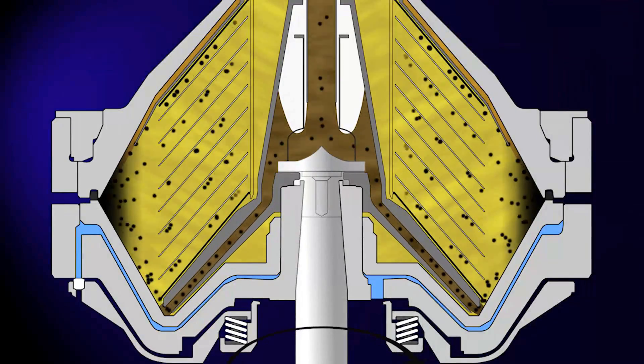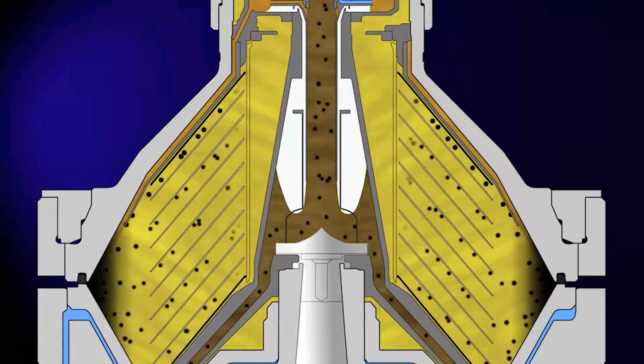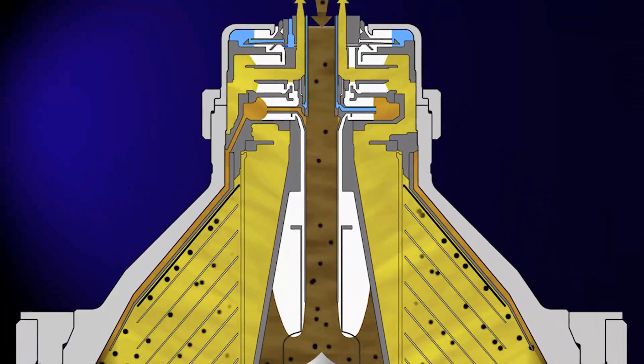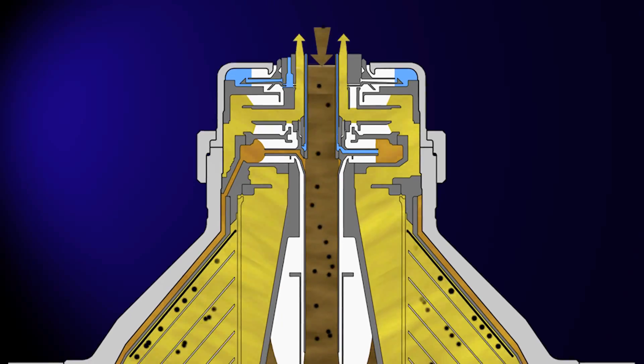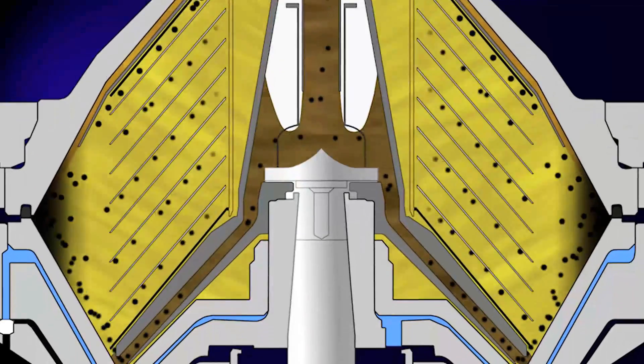The liquid flows through and out of the centrifuge. As more broth enters the bowl, it displaces the clarified liquid to the top of the bowl where it exits, while the cells continue to build up on the bowl surface.